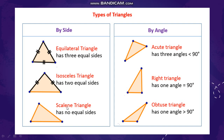We will just revise this in the next slide. The next type of triangle is based on angles. Again, in angles you have three types. If a triangle has all three acute angles, it is called an acute angled triangle.